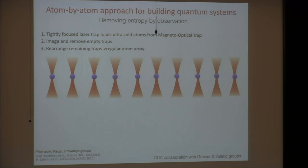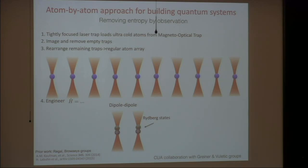At this point we end up with a regular array of atoms, typically a couple of micrometers in separation. We then need to engineer the interaction between them. In order to do that, we excite these atoms into the so-called Rydberg states — states with large principal quantum numbers in which the atom size becomes very large — and then atoms start feeling each other's presence even at large distances. By doing that, we can execute quantum operations with very high fidelity. This is a collaborative effort within Harvard-MIT with the groups of Markus Greiner and Vladan Vuletić.